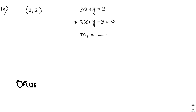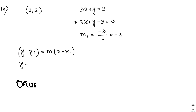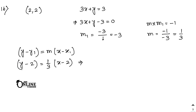Since the new line passes through (2, 2) and is perpendicular to m1 equals minus 3, the slope m equals 1/3. Using y minus y1 equals m(x minus x1): y minus 2 equals 1/3 (x minus 2). Multiplying by 3: 3y minus 6 equals x minus 2, giving x minus 3y plus 4 equal to 0.